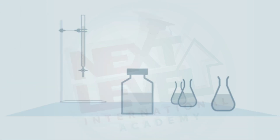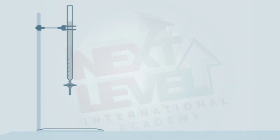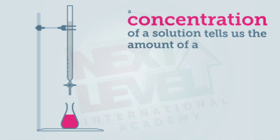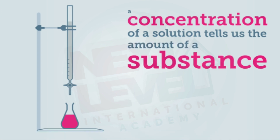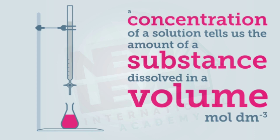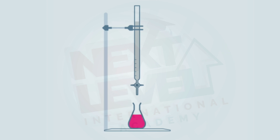We are going to find out the concentration of the acid, which goes into the burette, and sodium hydroxide goes into the titration flask. The concentration of acid is the amount of acid dissolved in a given volume. The equation is C = n/V, where C is concentration, V is volume in cubic decimeters, and n is moles. The unit of concentration is moles per cubic decimeter.